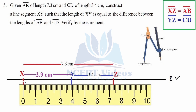Now take ZY equal to CD, which is 3.4 cm. Open your compasses and place the needle on X, opening to 3.4 cm — this is 1, 2, 3, 4 — 3.4 cm. Pick it up, place the needle on Z, and make an arc. Mark that point as Y. This gives ZY equal to 3.4 cm, and we need to find the remaining distance XY.